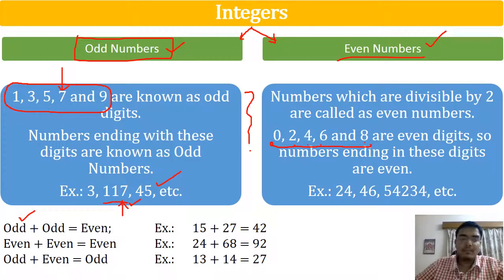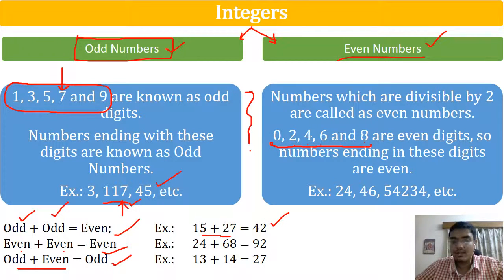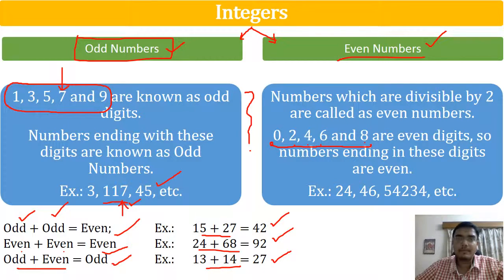If you add an odd number with an odd number, you get an even number. If you add even plus even, you get even. If you add even with odd, you get odd. So if you add the same type of numbers, you get an even number; if you add different types, you get an odd number. For example: 15 plus 27 gives 42 (even); 24 plus 68 gives 92 (even); 13 plus 14 gives 27 (odd).